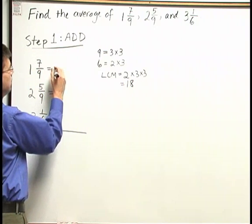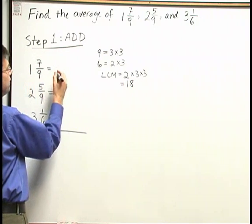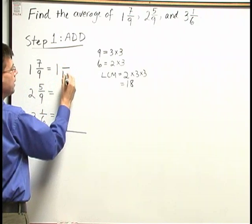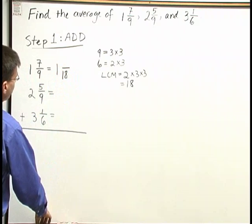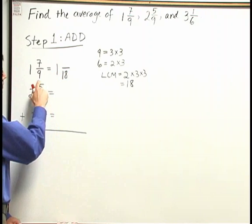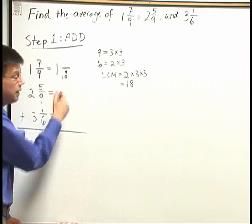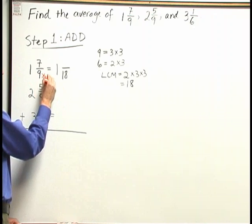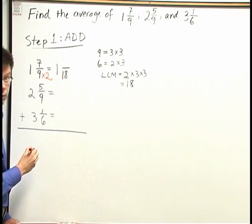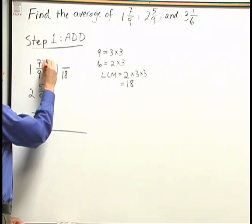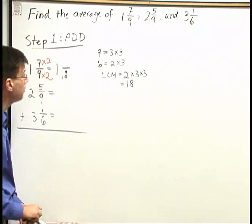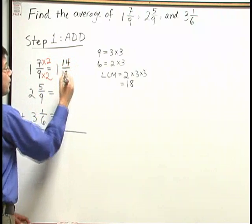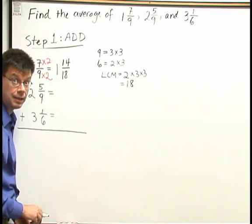Now let's see here, I have one and seven ninths is going to become one and so many eighteenths. In order to rewrite seven ninths with denominator eighteen, I need to multiply that nine below by two. Whatever I do below, I've got to do above. I also have to multiply the seven by two to get fourteen. So I have one and fourteen eighteenths.